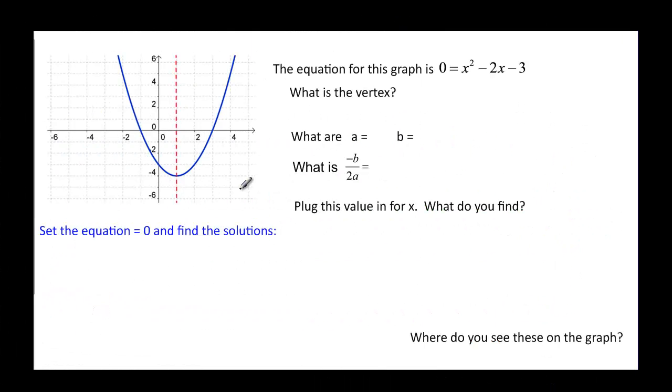So now we have one graphed. It's x squared minus 2x minus 3, and we want to know what the vertex is. Well, if we're looking at a graph, we can tell easily what that is. It looks like it's negative 4 and 1. Negative 4 and the y, x would be 1, so 1, negative 4.